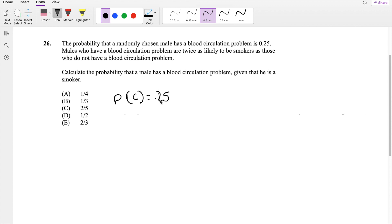Then they say, in the second statement here, the probability of males who have blood circulation problems are twice as likely to be smoker as those who do not have circulation problems. So okay, let's rephrase this.